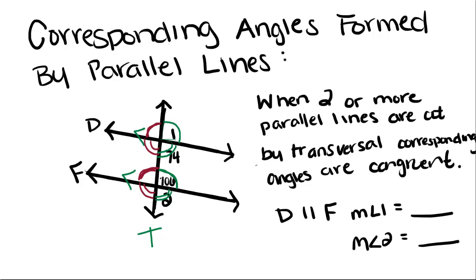So knowing that, we need to find the measure of angle 1 and angle 2. These are the two parallel lines, so their corresponding parts are congruent. The measure of angle 1 has to be 106 degrees because congruent angles have equal measure. And angle 2 is congruent to its corresponding angle, so angle 2 has to measure 74 degrees.